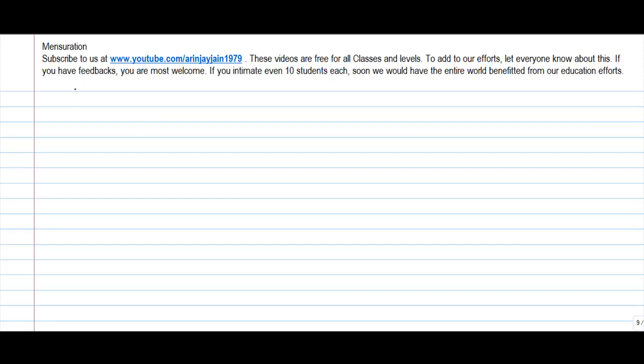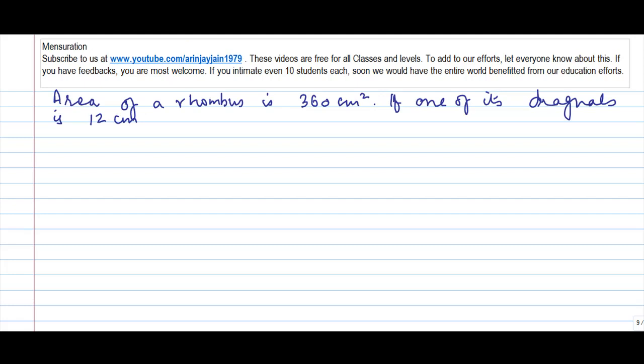Let's see one more problem on area of a rhombus. Area of a rhombus is 360 centimeters squared. If one of its diagonals is 12 centimeters, find the other diagonal.